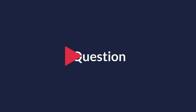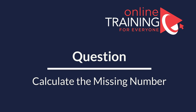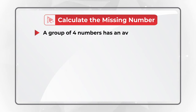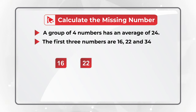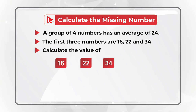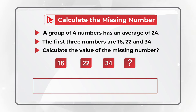Here is one of my favorite questions where you need to do mental math calculations. You are presented with a group of four numbers and this group has an average of 24. The first three numbers are 16, 22, and 34. You need to calculate the value of the missing number, which is represented as the question mark, and you have four different choices.